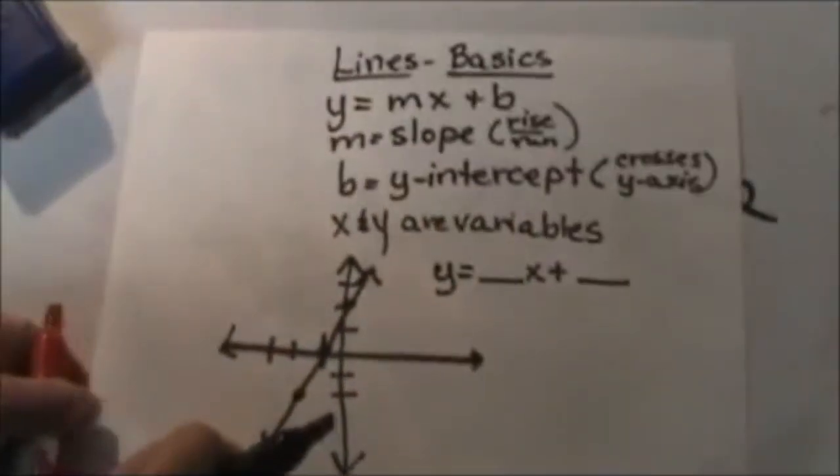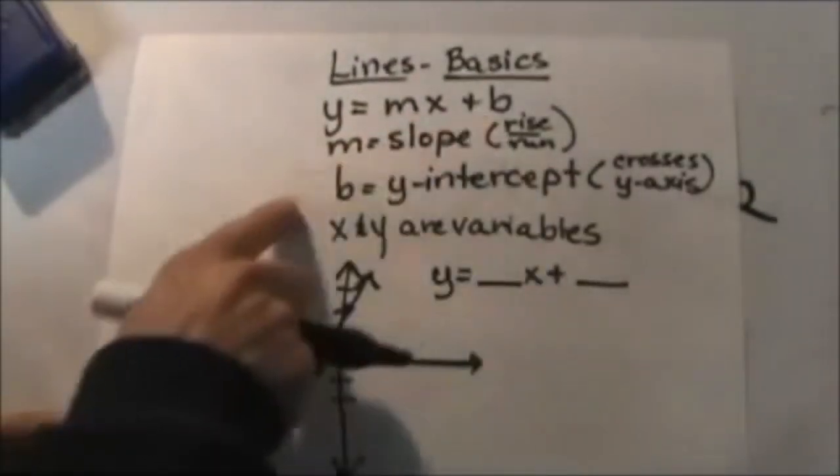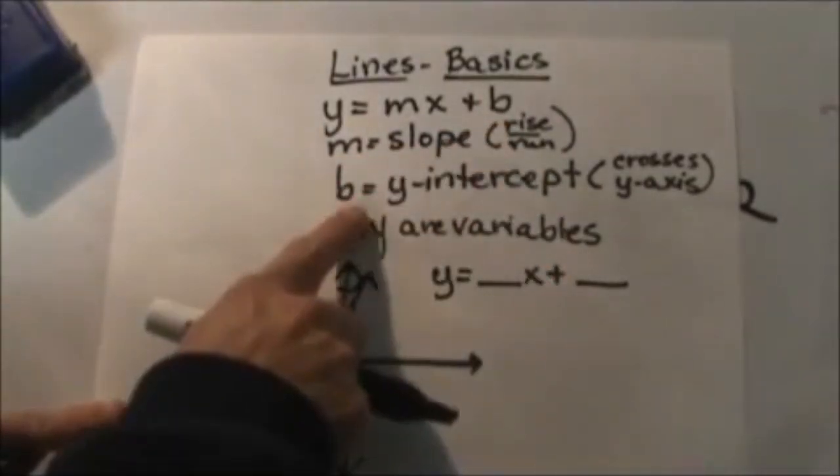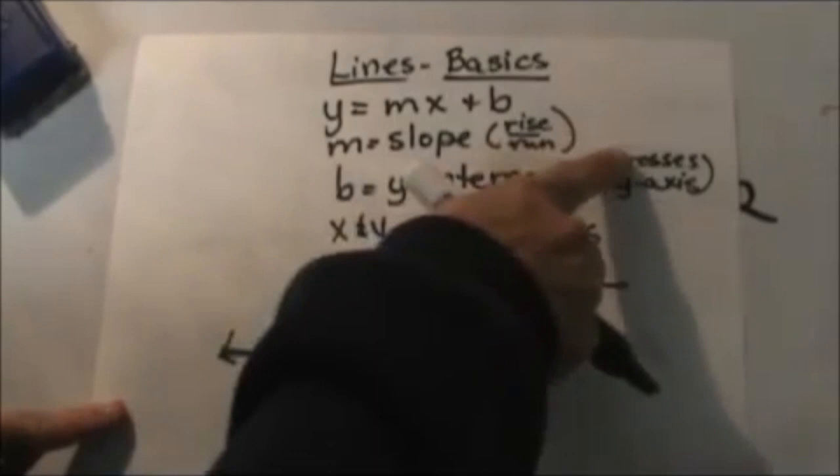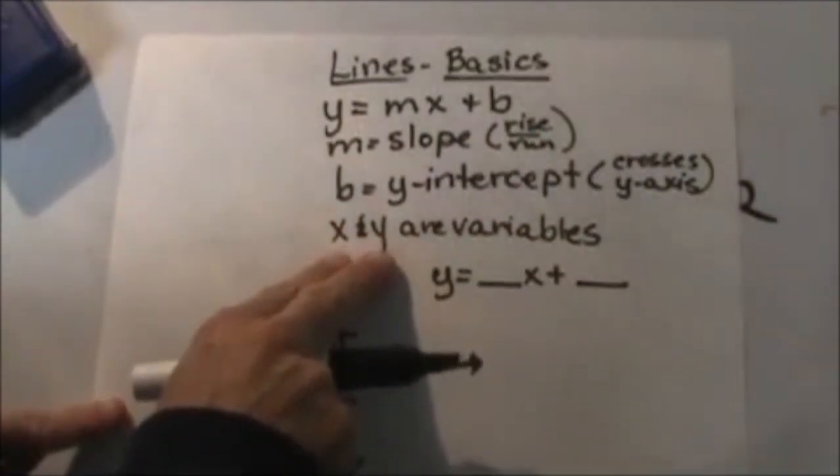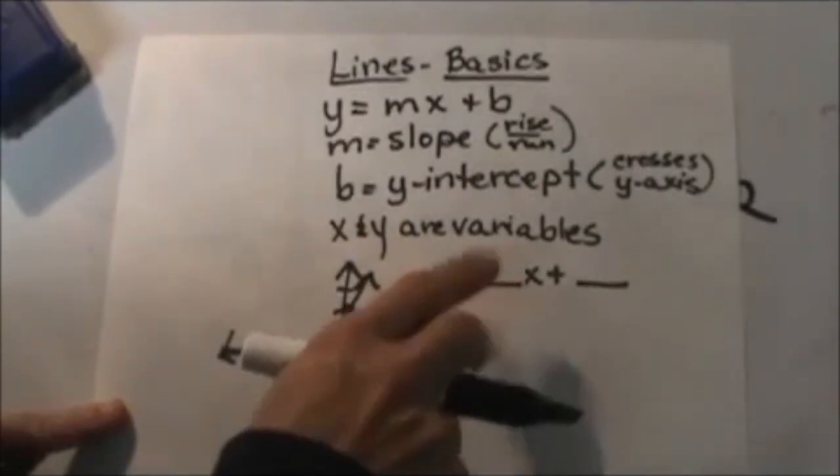Now, here's a quick little overview. You've got the form y equals mx plus b, where m is the slope, and that's rise over run. b is your y intercept, that's where it crosses the y axis. And then you keep your x and the y as variables. So here's your skeleton equation.